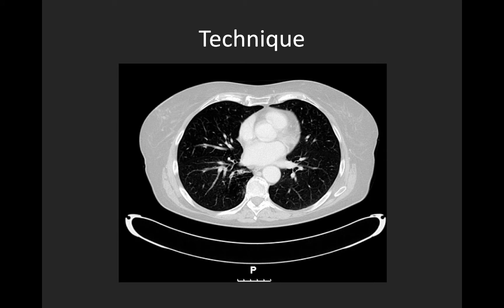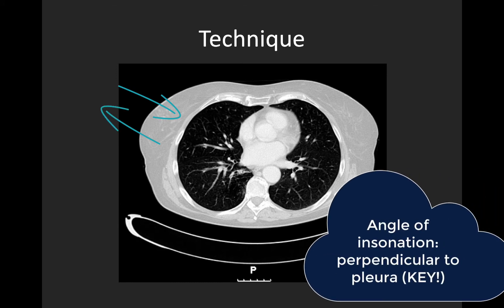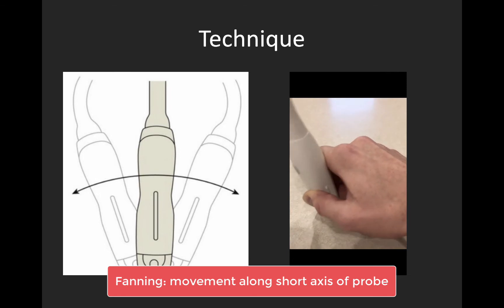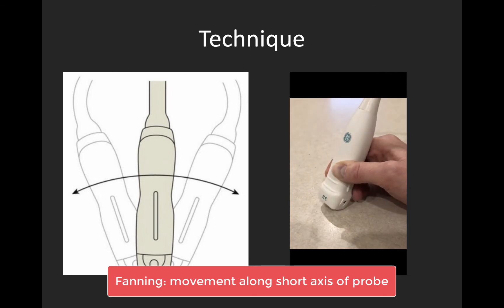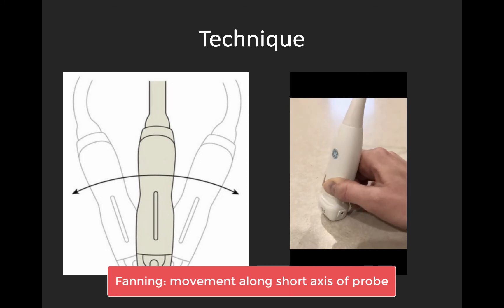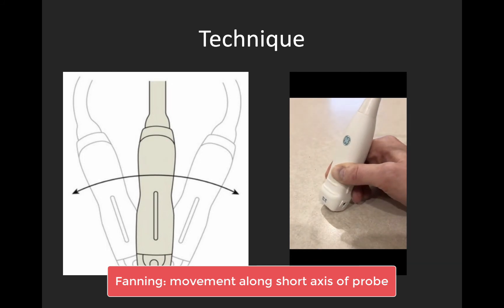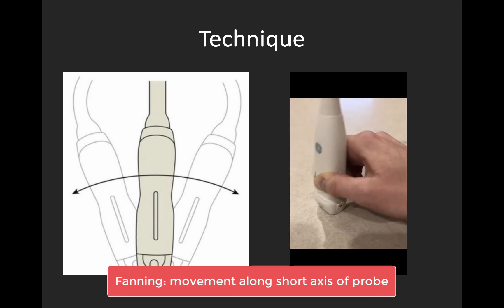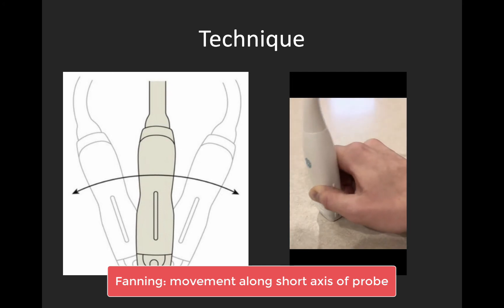The most important thing for technique is that we want our ultrasound beam to be perpendicular to the pleura. As you can see from the CT chest slice, the contour of the chest wall often doesn't match that of the pleura underneath it, so you'll have to employ what we call fanning or tilting. Fanning is movement in the short axis of the probe along a fixed point on the body, while changing the angle of incidence away from 90 degrees. As a common example, when scanning the anterolateral chest, you'll often need to fan your beam medially to find that perpendicular angle.